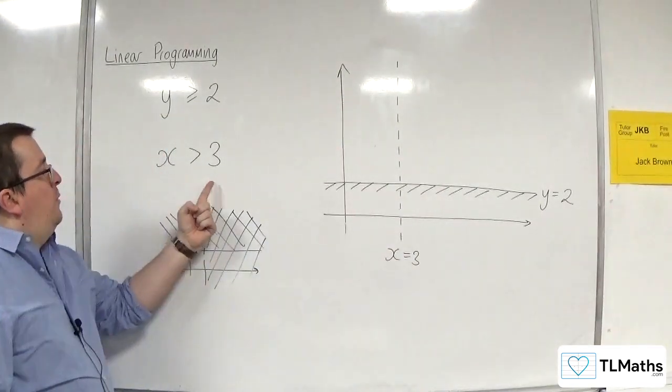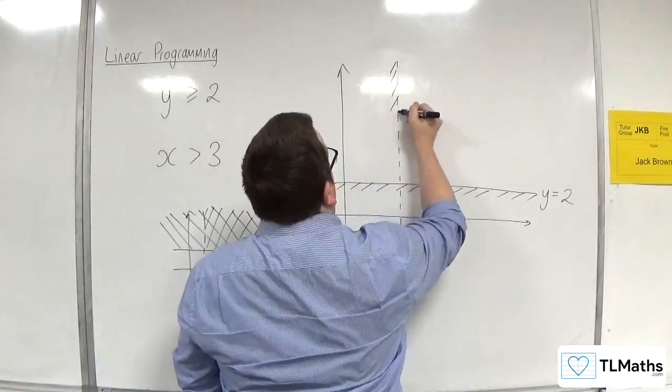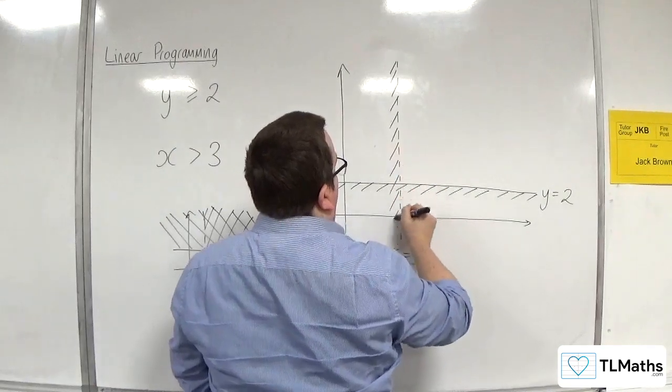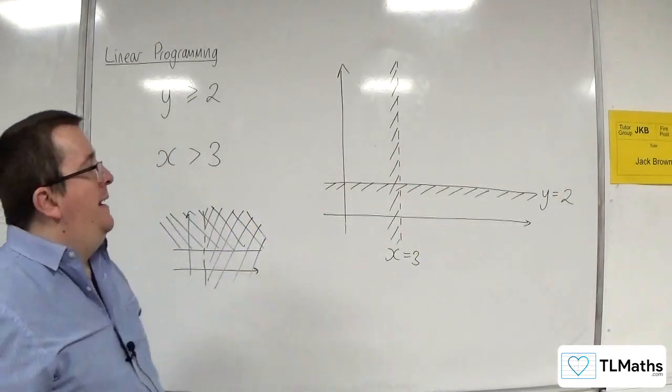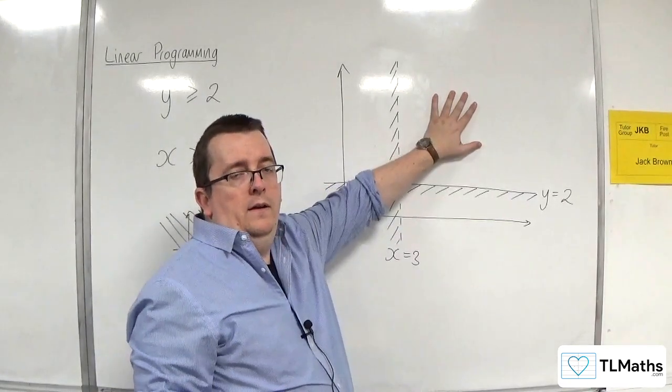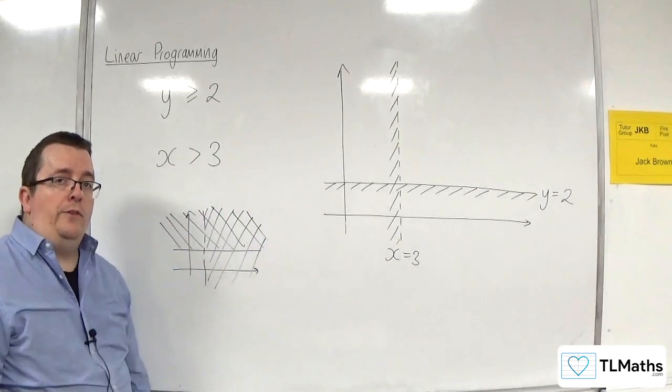For x is greater than 3, I want to the right, so I'm going to shade the region I don't want. And now you can clearly identify that it is this region up here that I want, that satisfies both of those inequalities.